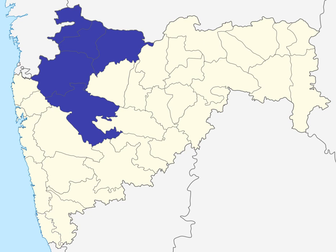Nashik Airport is the major airport in the division and is well connected to other cities in India. Jalgaon Airport is another airport, with flights operating from Mumbai to Jalgaon and return. Railway stations serving the division include Nashik Road, Manmad, and Bhusaval.